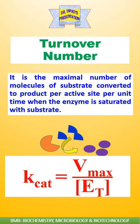V_max is maximum velocity and E_T is total enzyme concentration. Let's derive the formula for turnover number. The initial velocity of this enzymatic reaction is k2[ES] because the second step is the rate-limiting step.